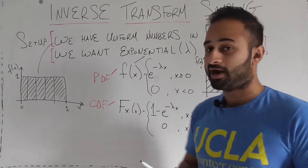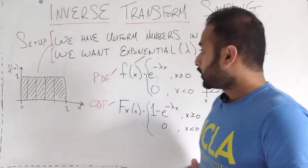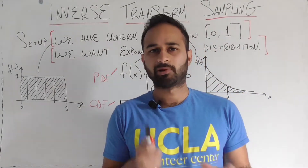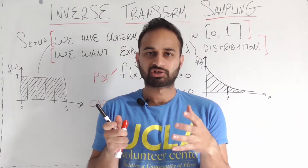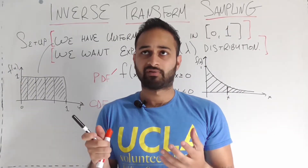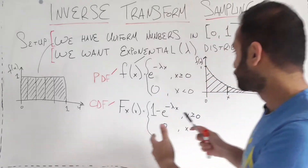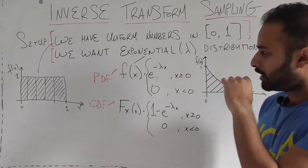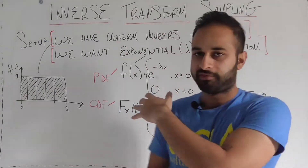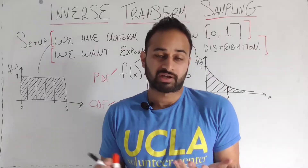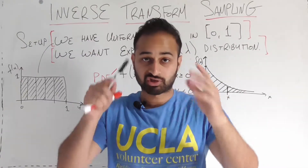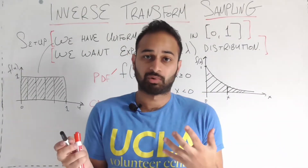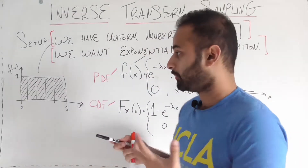So our goal is: given uniform zero-to-one numbers, apply some transformation to each number so that the resulting numbers follow the exponential lambda distribution. We did this for the exponential case, but this applies to other distributions too — the normal distribution, the gamma distribution, or any distribution we might want to generate.